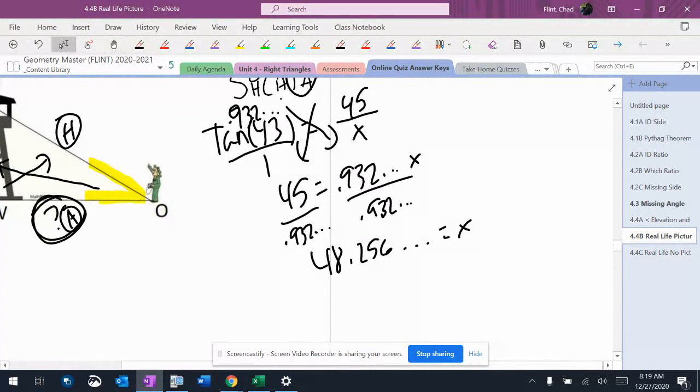I think it's the nearest integer. Nearest integer, that means no decimals. Round to 8, using the 2. 48.